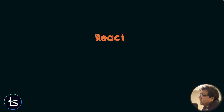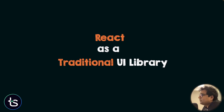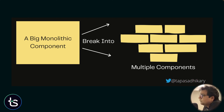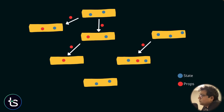Let's start with React. I'm not going to teach React from the beginning, but a few fundamentals are good to go through to set the context correctly. React is a traditional UI library — no doubt about that. It exists because we had big monolithic components and wanted to break them into multiple components to enhance reusability. The component architecture comes into picture: one component can talk to another, and we can share components across the app. That's what React is known for. These components talk to each other using something called props.